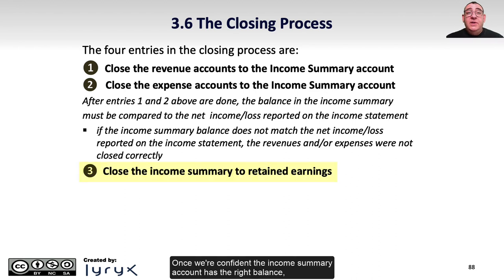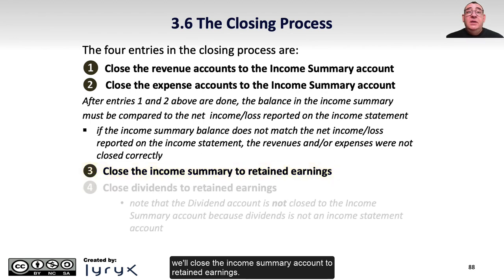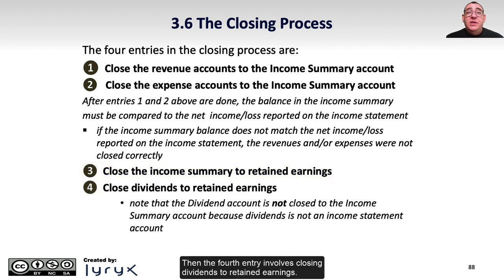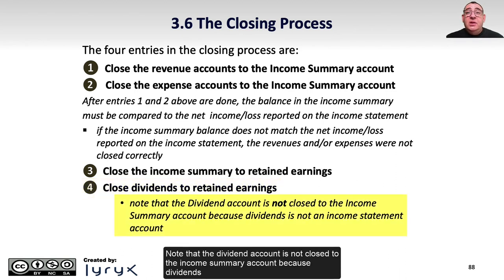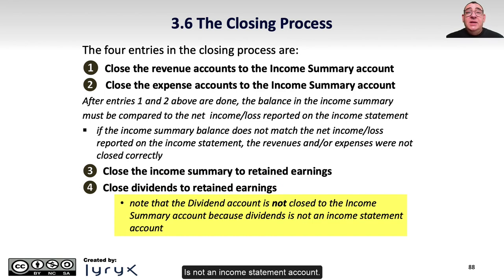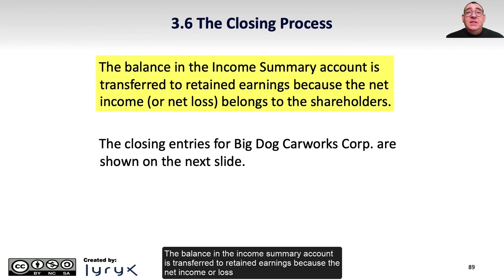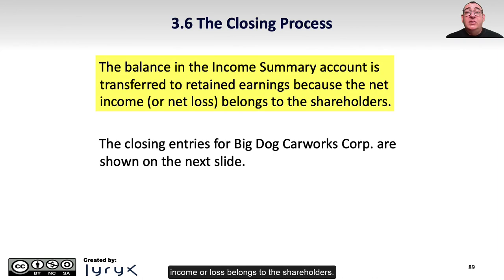Once we're confident the income summary account has the right balance, we'll close the income summary account to retained earnings. Then the fourth entry involves closing dividends to retained earnings. Note that the dividend account is not closed to the income summary account because dividends is not an income statement account. The balance in the income summary account is transferred to retained earnings because the net income or loss belongs to the shareholders.